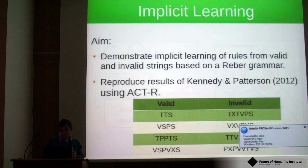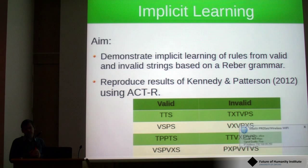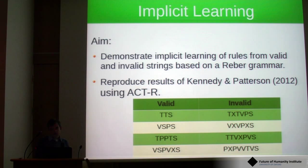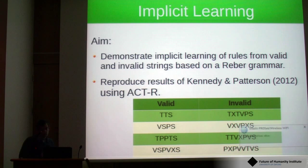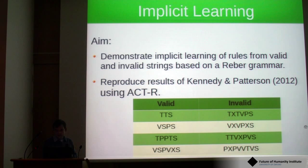To demonstrate the types of memory tasks possible, we have two models. The first is a model of implicit learning, set up to reproduce the results of a paper published at the ICCM conference using ACT-R. The strings are from a Reber grammar. On the left you have strings which are valid, like TTS and VSPS, and some invalid strings on the right.